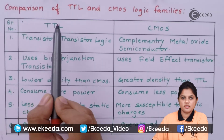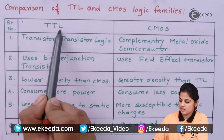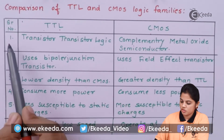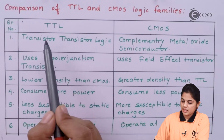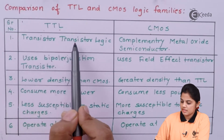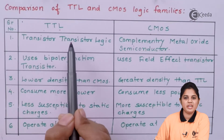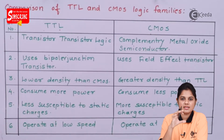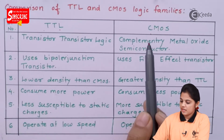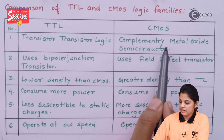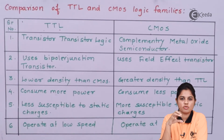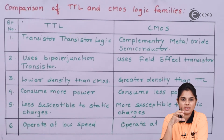Here we have the comparison points between Transistor-Transistor Logic and CMOS, which stands for Complementary MOSFET. The first point is the full form itself — TTL means transistor is the major component used to implement this logic family, whereas for CMOS, the Complementary Metal Oxide Semiconductor, we use MOSFET technology, concentrating on field effect transistor technology.